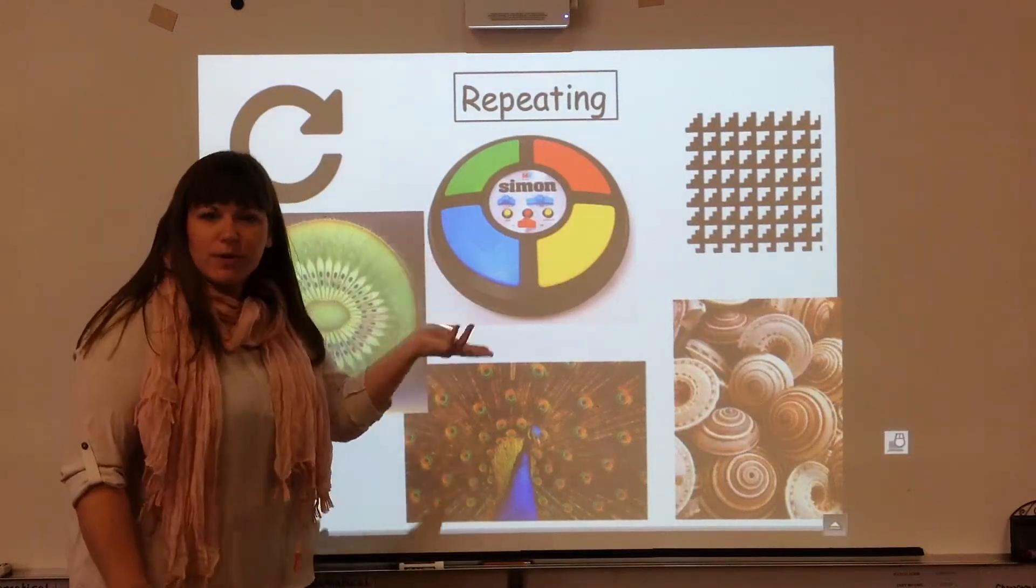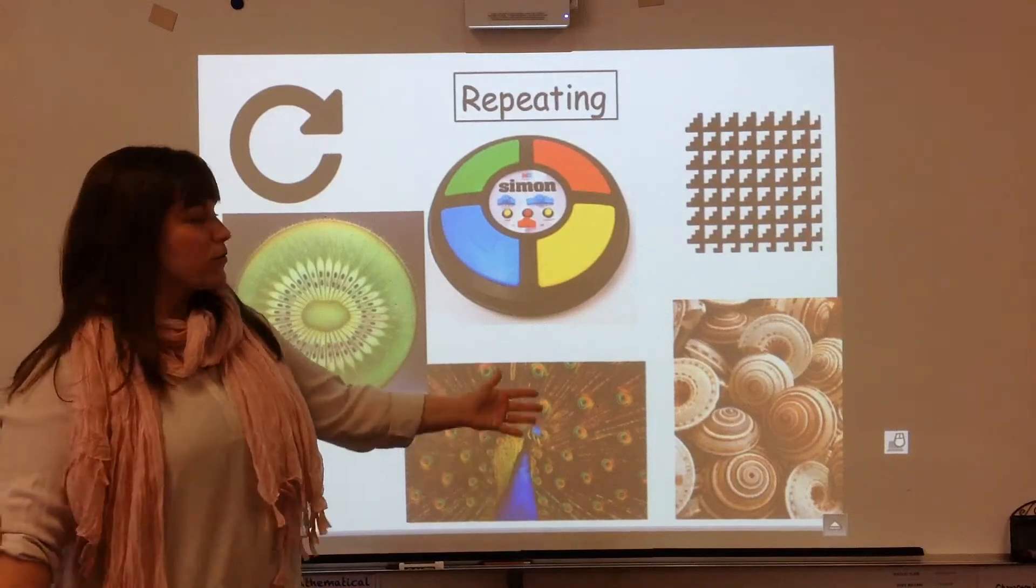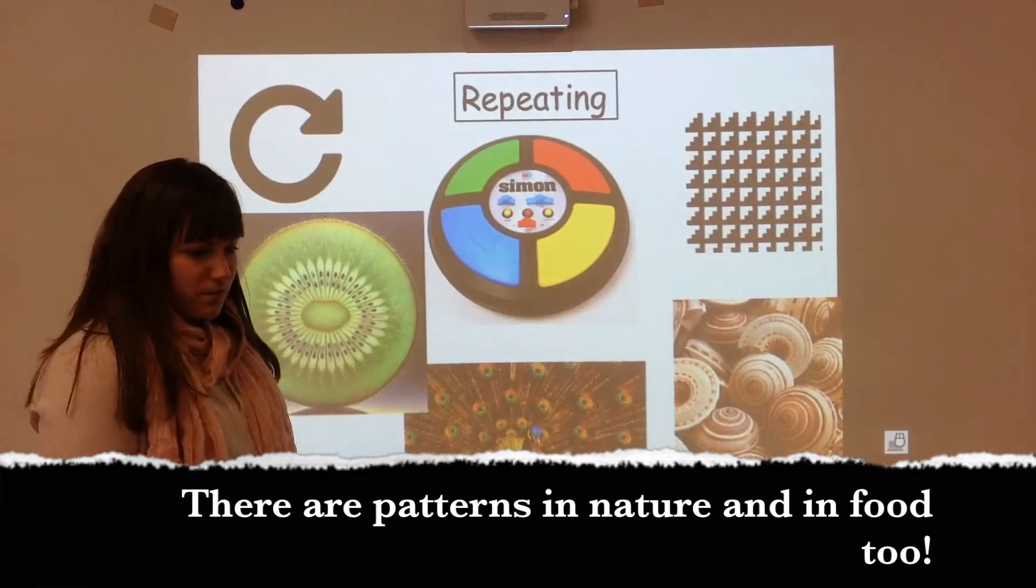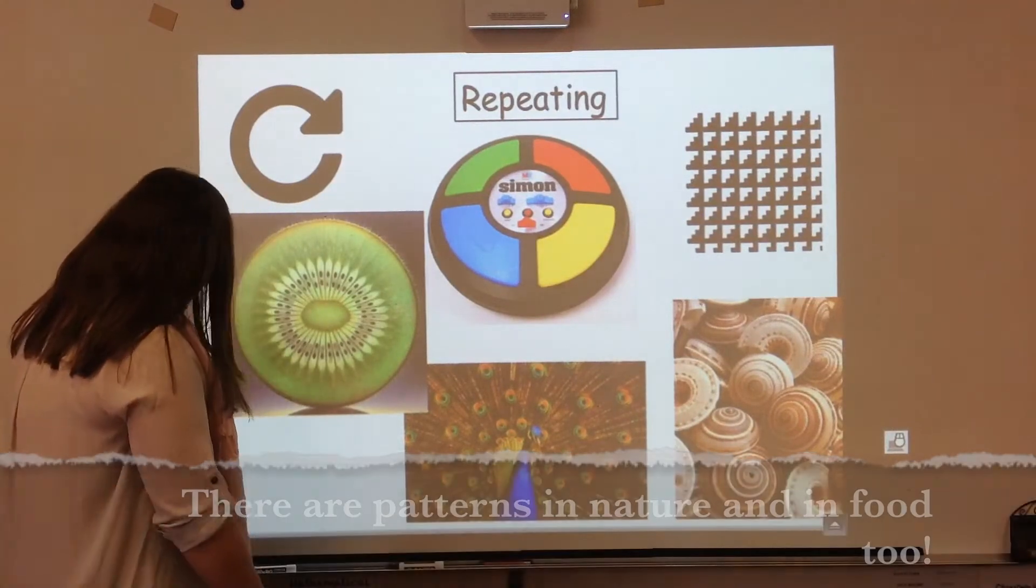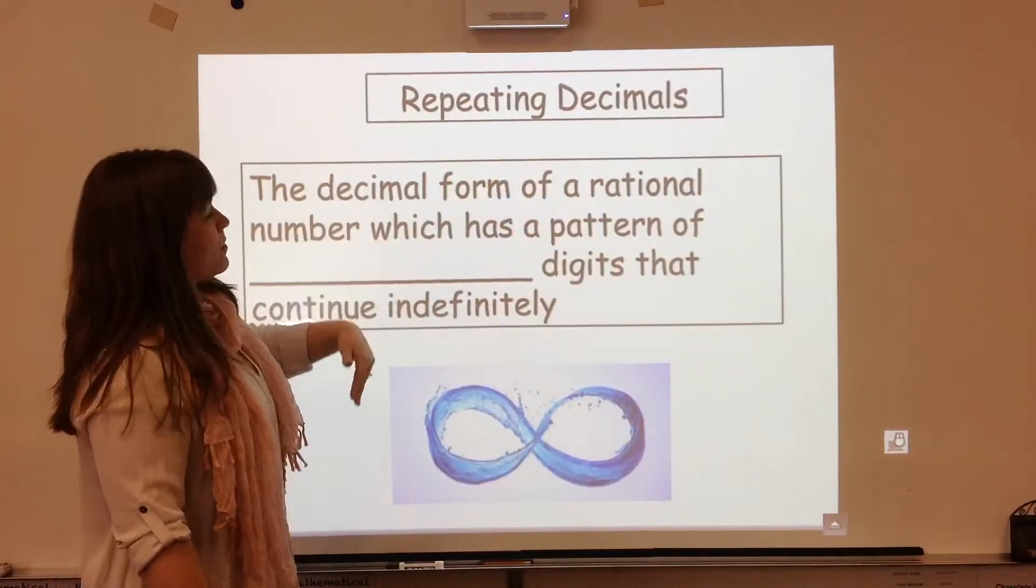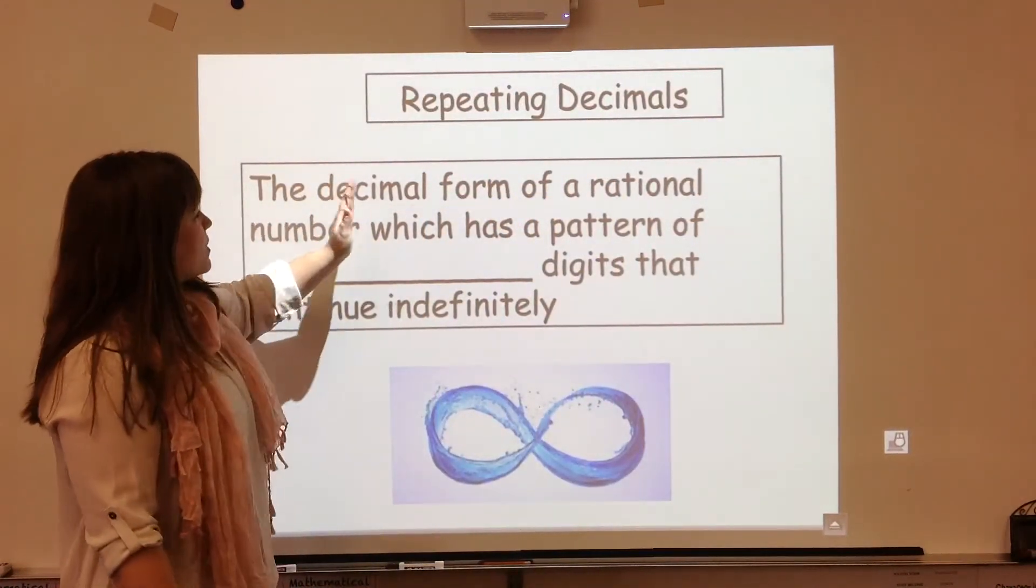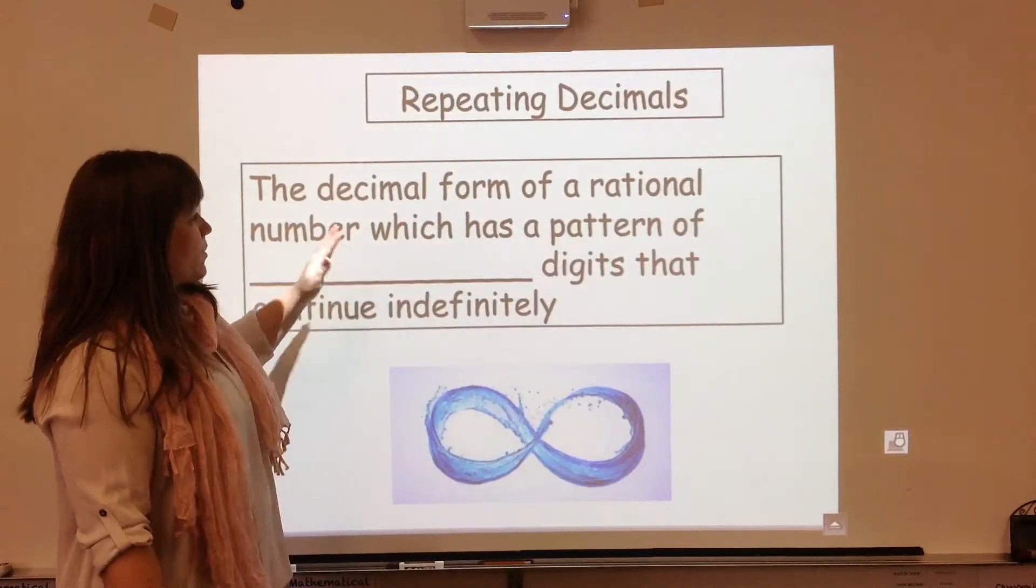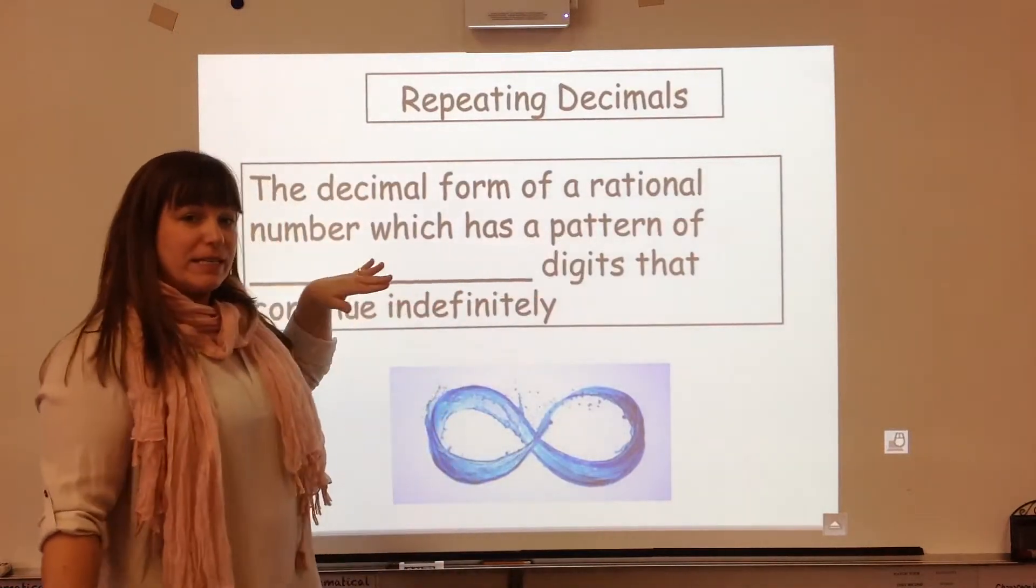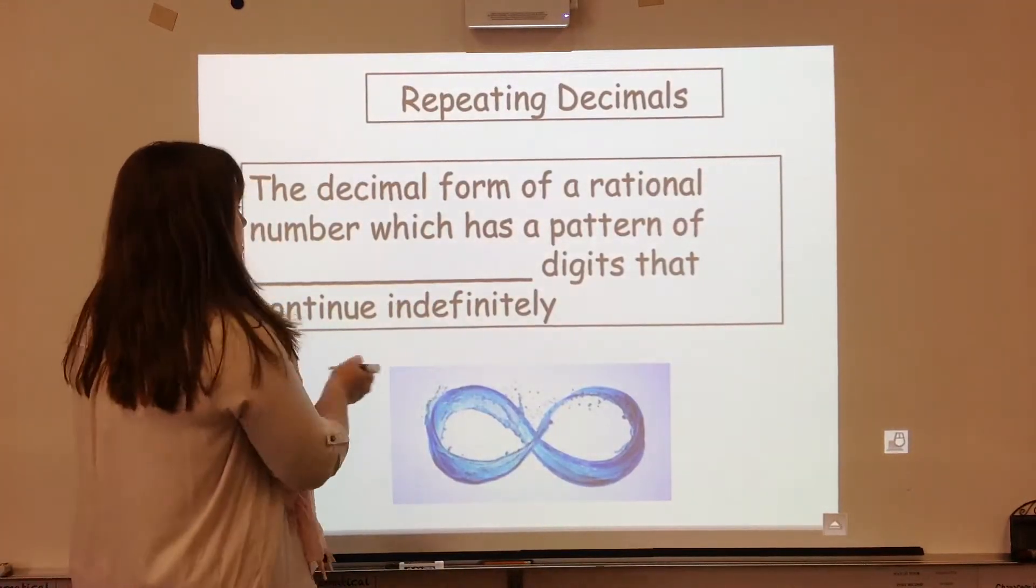Like I did with terminating, here's just some real life associations. You can bring meaning to the word repeating. Obviously it repeats over again. Patterns are all around us and repeating patterns are what we're going to be talking about. In the math side of repeating decimals, it is a decimal form of a rational number, same as the terminating, but it has a pattern of repeating digits this time and it doesn't mean that zero is taking all the time.